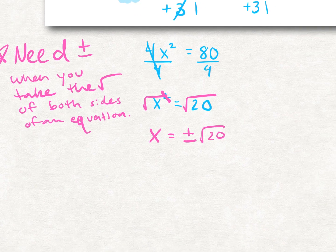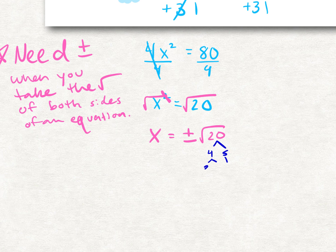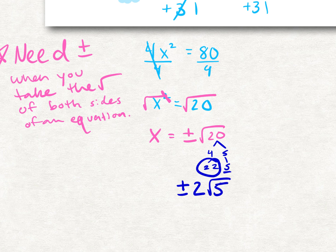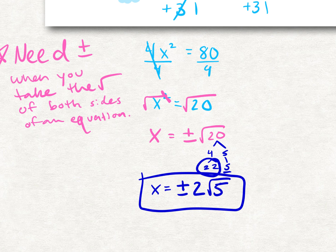The last step is we always need to simplify our radical. We find two factors of 20, which would be 4 and 5. We break it down into prime factors: two factors of 4 are 2 and 2. We circle groups of 2 — whatever we circle comes to the outside. So we still need the plus or minus. We have plus or minus 2. The 5 doesn't get circled, so it stays inside: 2 square root 5. Our answer is x equals plus or minus 2 square root 5. Always simplify the radical.